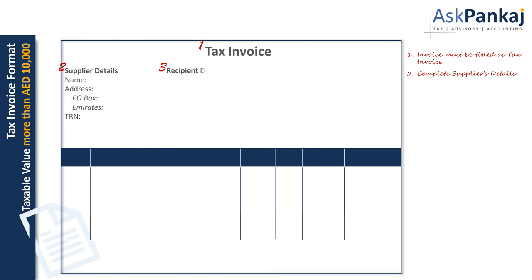The third requirement is to mention your customer's complete details. You must mention the customer's complete name, mailing address, and TRN. For the mailing address, please ensure that at least the customer's PO box and corresponding Emirates is mentioned on the invoice.